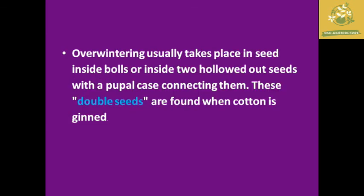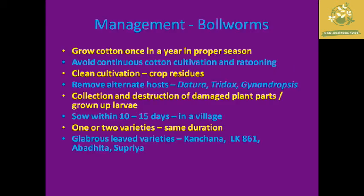The adult is a grayish-brown moth with a broad blackish tip near the forewing tip, as seen in the picture. They cause a double-seed symptom found when cotton begins to open. Now, moving to the management of boll worms, I have listed the methods used in cotton.